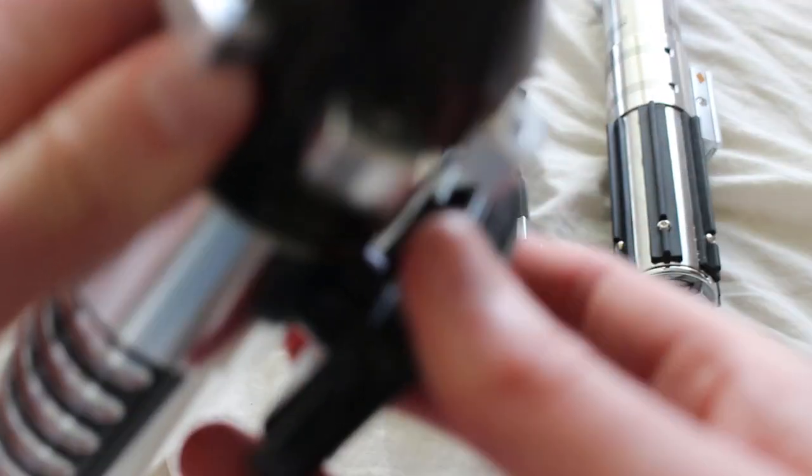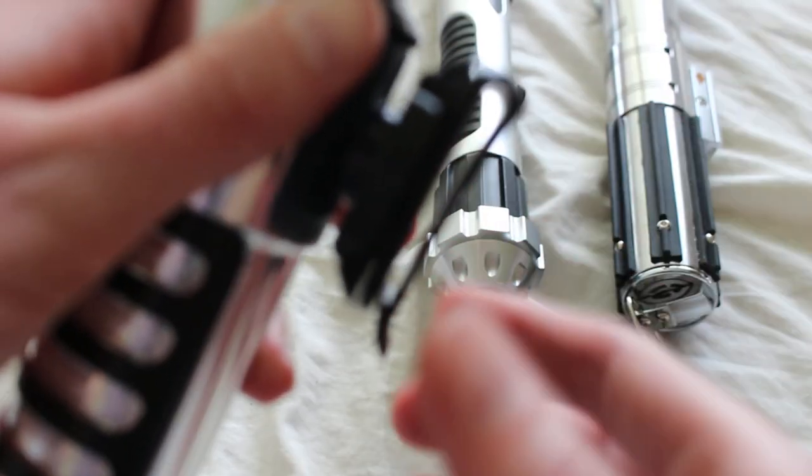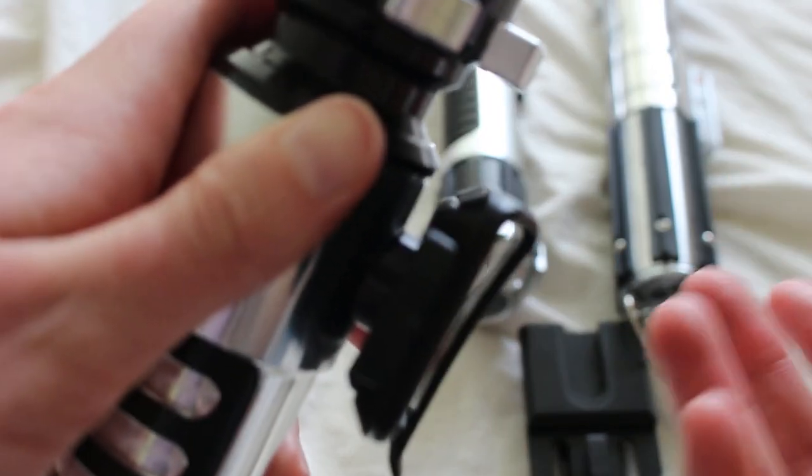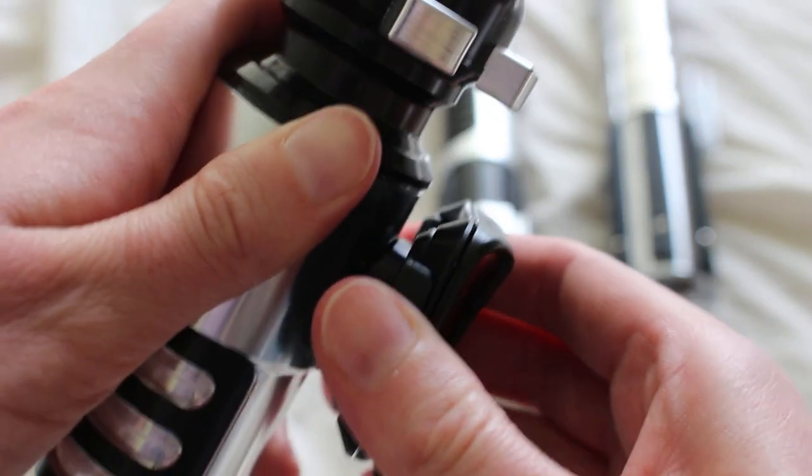Although it can kind of move a little bit like this, it can't move up as long as these tabs are out. Now, if you want to remove the lightsaber again, you just hold these tabs in again, slide the lightsaber up, you're good to go.